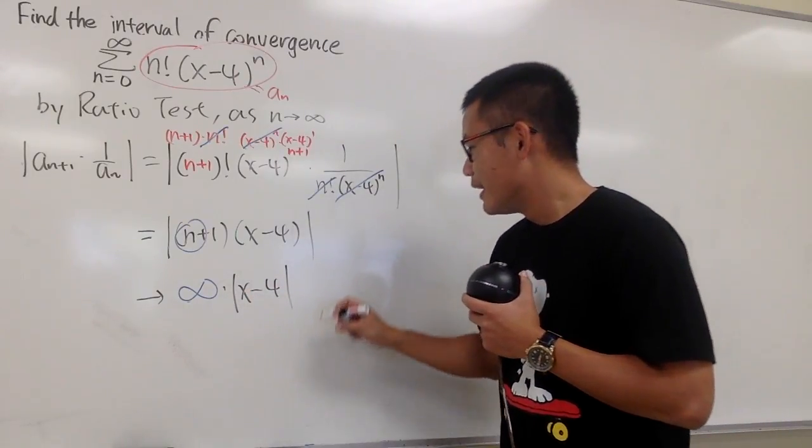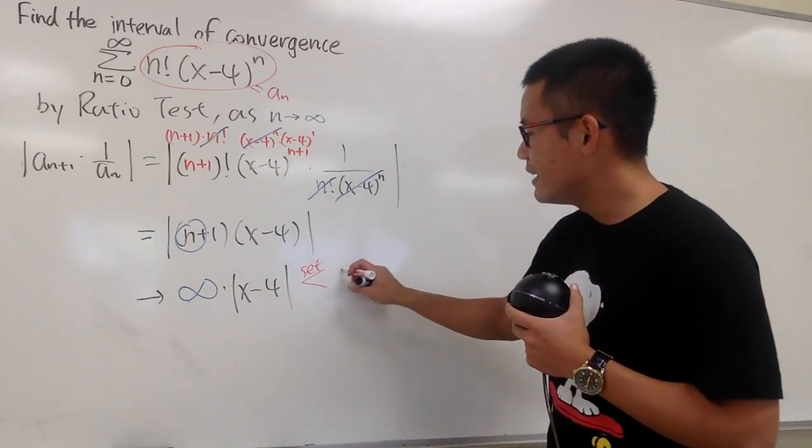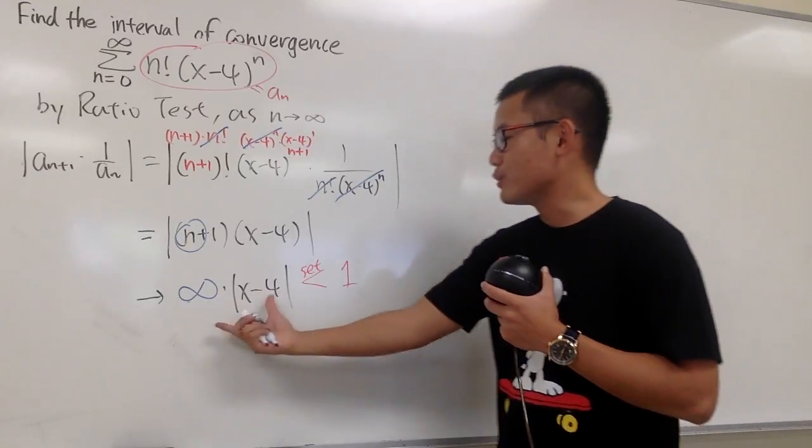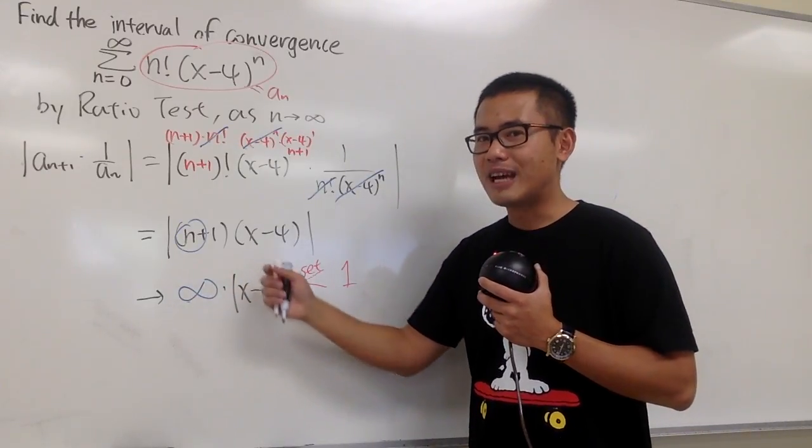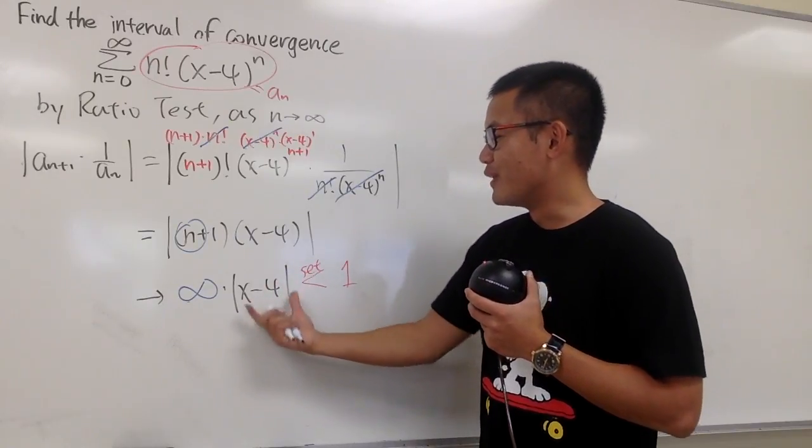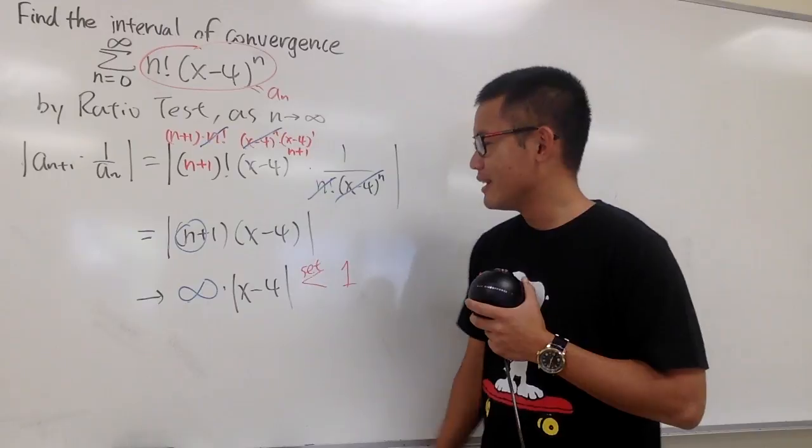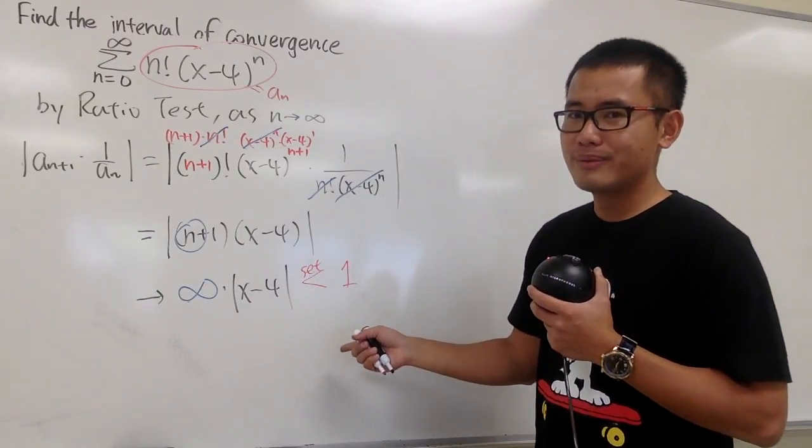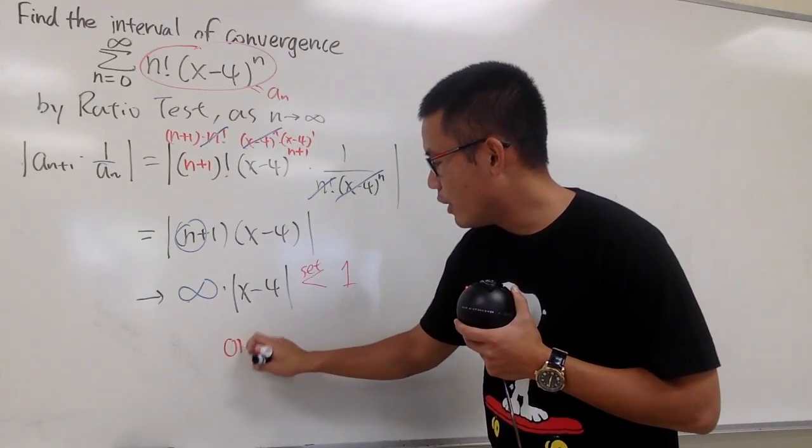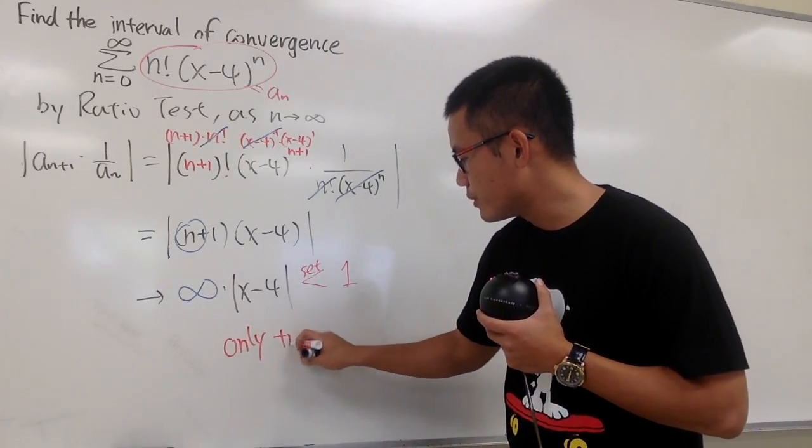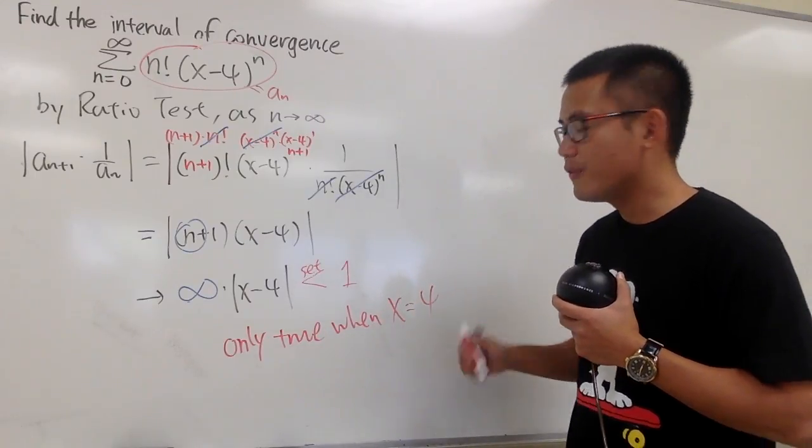Usually, we have to set this result here to be less than 1, and then we have to try to solve for x. However, when you have infinity times (x-4) like this, this is always going to be infinity. Can we ever make this true? Well, this right here, it's only true when x is exactly equal to 4.